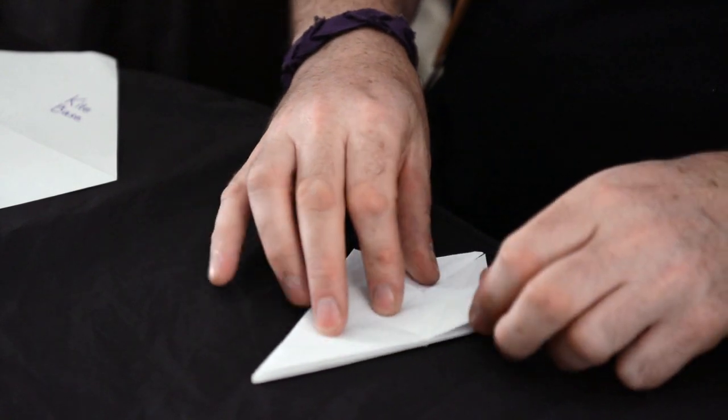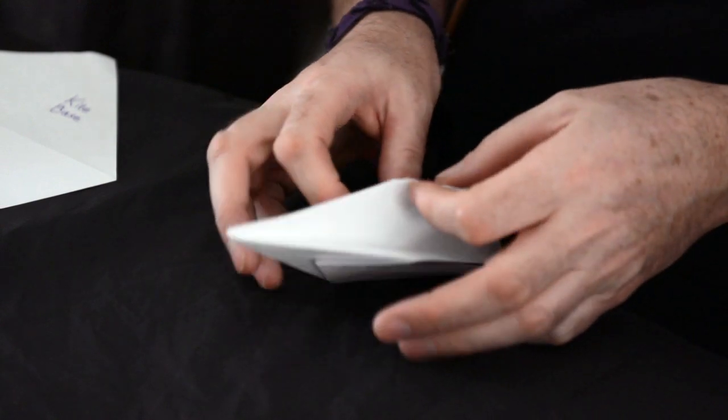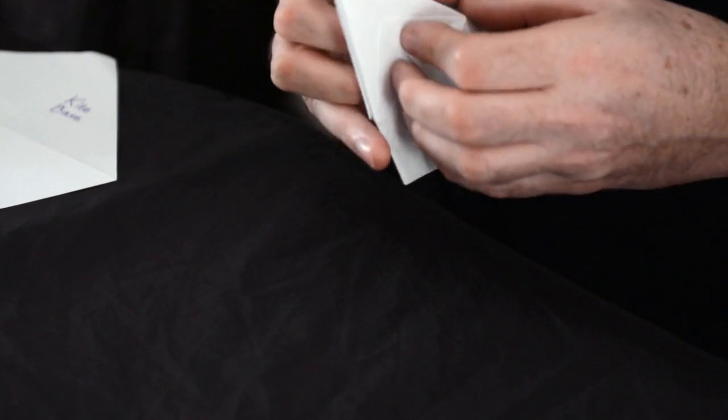Go to the opposite side, do the same thing. Now, open the piece again along that central axis, fold it down.